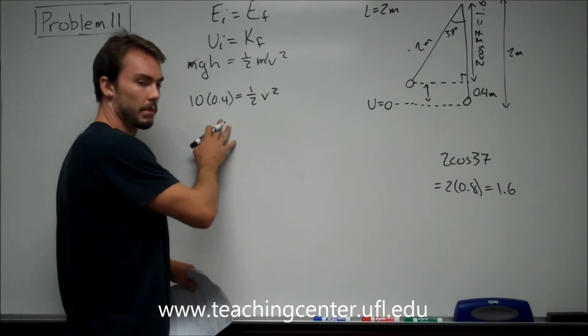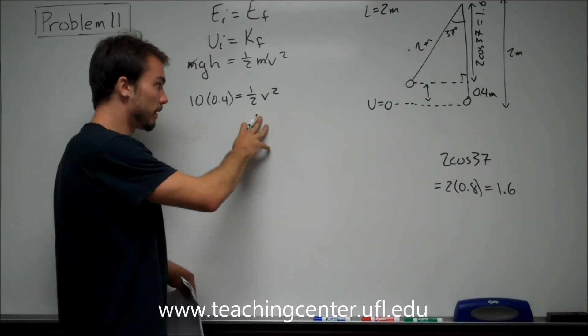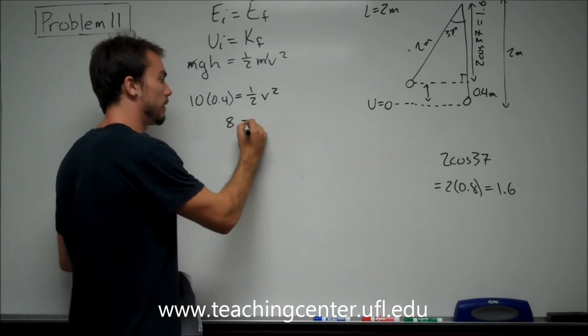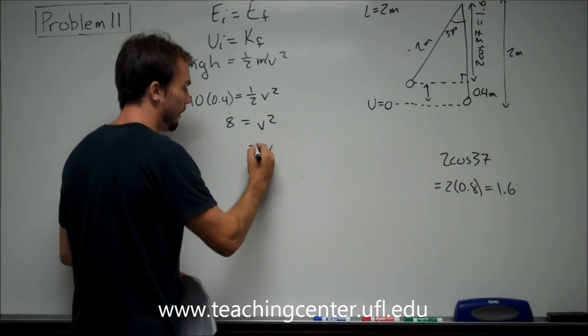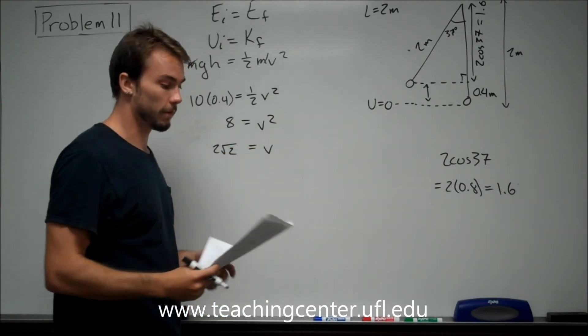So with that in mind, we say 10 times 0.4 is just going to give us 4. We're going to multiply that by 2 to get rid of this. And we're going to be left with 8 is equal to V squared, or V is going to be equal to the square root of 2 times 2, or 2 root 2.